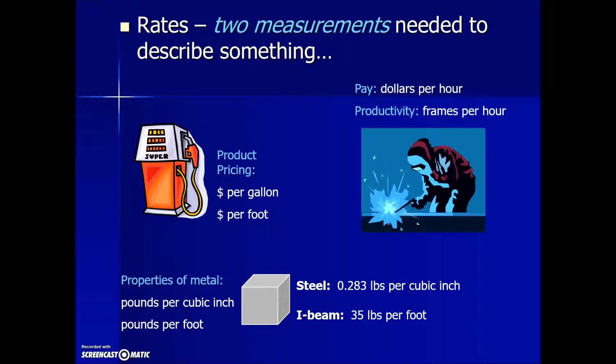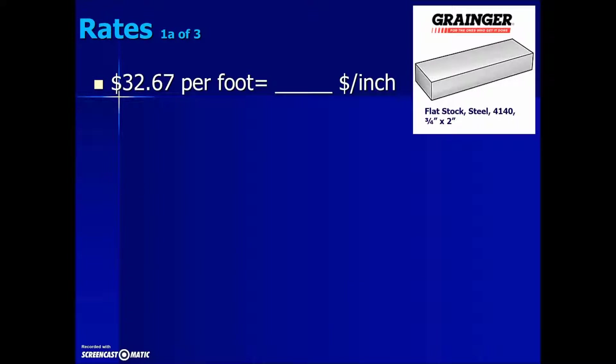Sometimes it's useful to be able to convert such units. In this first example, we have the cost of some stock steel at $32.67 per foot, and we're asked to convert that into an equivalent price per inch.